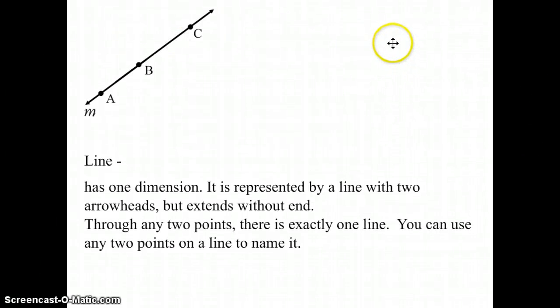For example, the name of this line we could call AB. You could also call it BA, BC or CB, and lastly AC or CA.